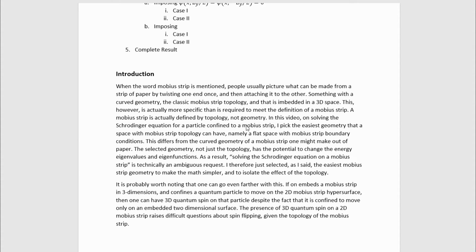In this video on solving the Schrodinger equation for a particle confined to a Mobius strip, I pick the easiest geometry that a space with Mobius strip topology can have, namely a flat space with Mobius strip boundary conditions and I don't bother to embed it in anything. This of course differs from the curved geometry of a Mobius strip that one might make out of paper. The selected geometry, not just the topology alone, has the potential to change the energy eigenvalues and eigenfunctions. Technically solving the Schrodinger equation in a Mobius strip is an ambiguous request. I therefore just selected the easiest Mobius strip geometry to make the math simpler and to isolate the effect of the topology.